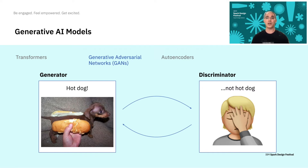The job of the discriminator is to not be fooled. In this example, we see the generator created an image of a hot dog, and the discriminator figured out that it's really not a hot dog. Because these two models are working against each other in this way, it forces the generator to be able to create really high fidelity content.